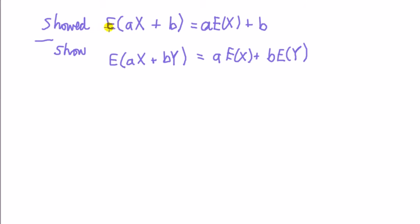Last time I showed you how to prove this for X being discrete, and hopefully you went away and did the same proof, but supposing X was continuous. Today we're going to show that the expected value of a constant times a random variable X plus another constant times a random variable Y is equal to the sum of a times expected value of X plus b times expected value of Y.